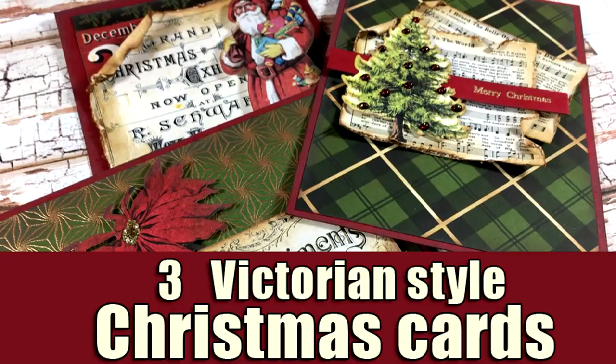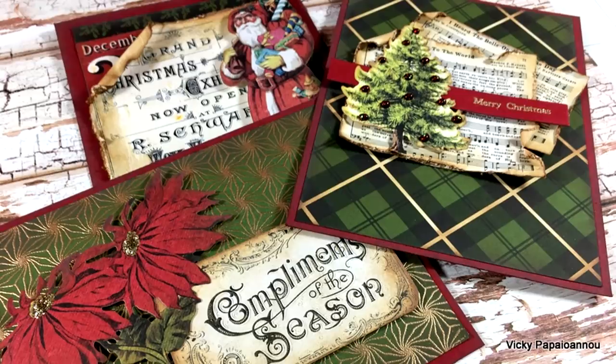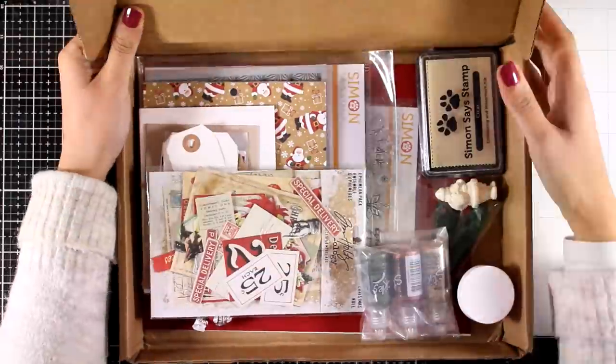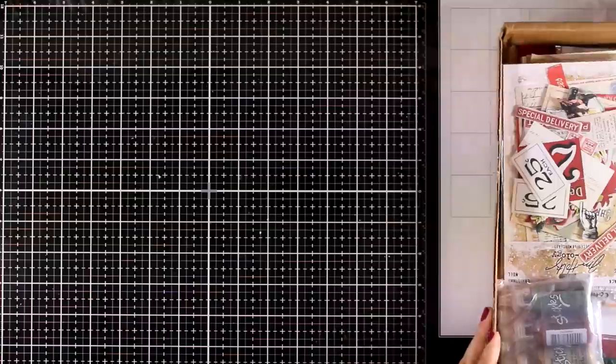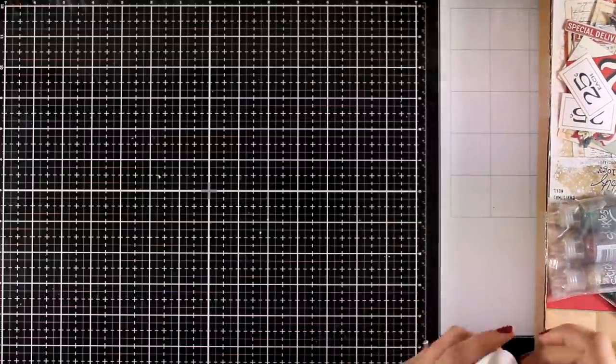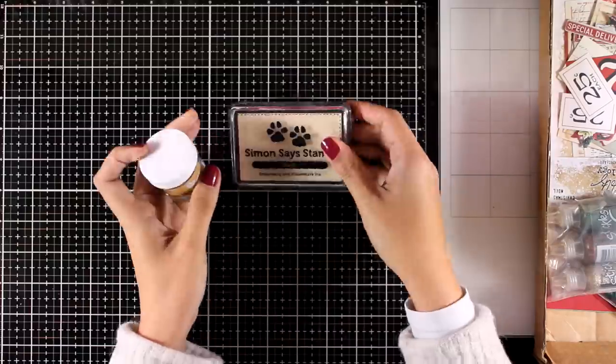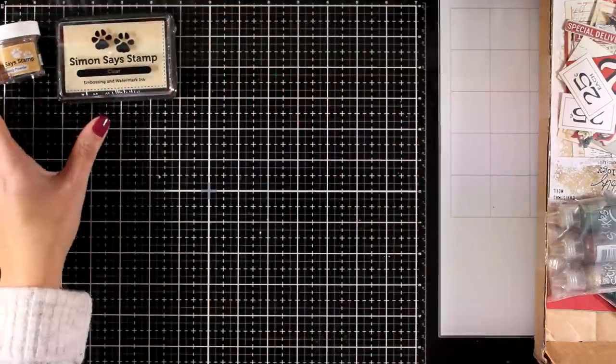Hi and welcome back, it's Vicky here. Today I'm going to create three Victorian style Christmas cards using products from the just released limited edition kit by Simon Says Stamp. Let's take a quick look at what's included. Remember, this is not one of the regular kits, this is a limited edition kit, so even if you're a subscriber and you want this kit, you need to order it.